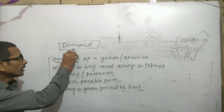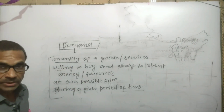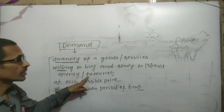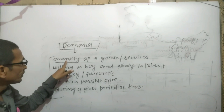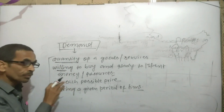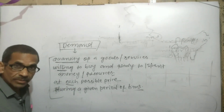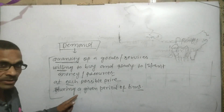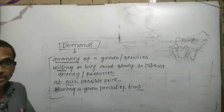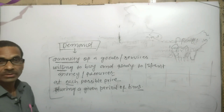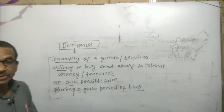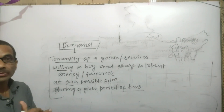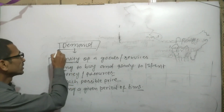Demand means the quantity of goods and services that a consumer is willing to buy and ready to spend money or resources on — having the capacity to buy a commodity or service at a fixed price during a given period of time. Such a type of economic factor is known as demand.